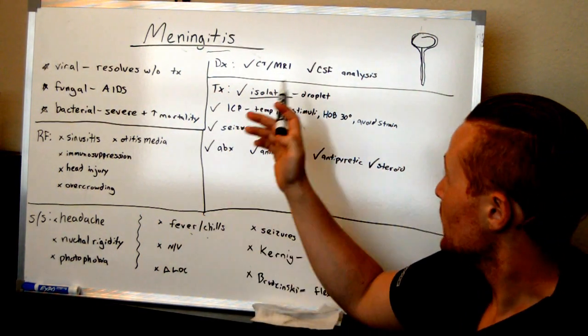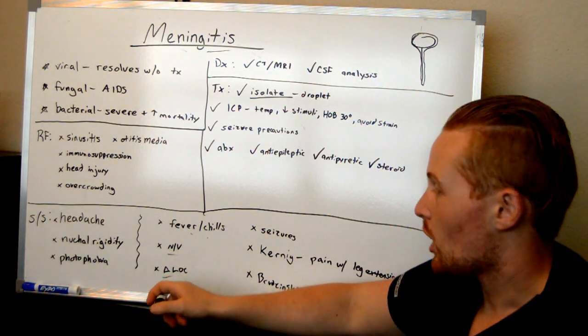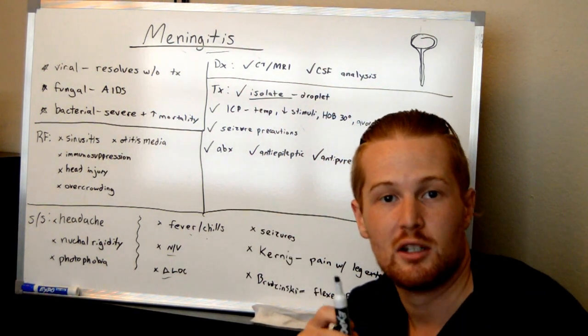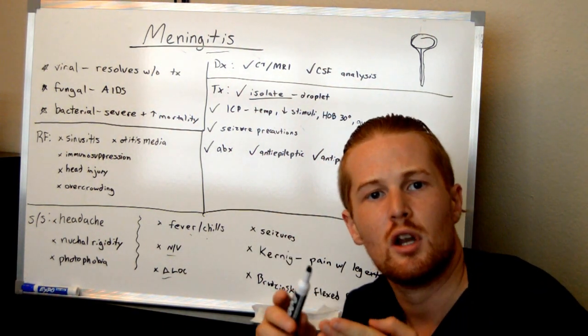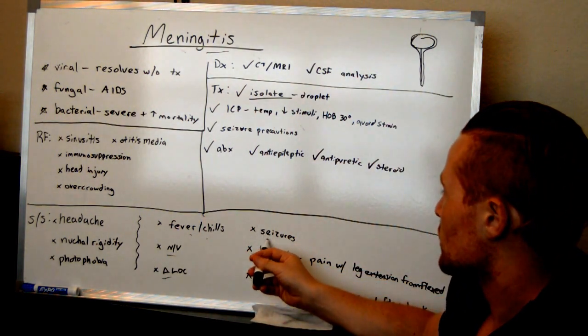When you have swelling around the brain, it puts you at risk for nausea and vomiting. You'll see an altered level of consciousness. It's affecting the brain. They may get to the point where they're having confusion, up to seizures, coma, depending on how severe it is.